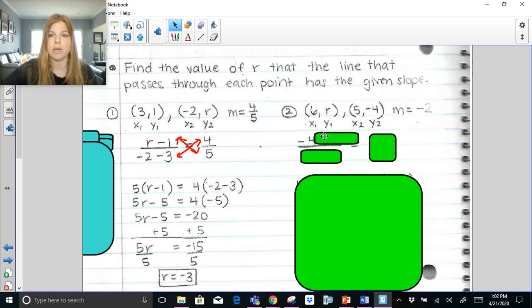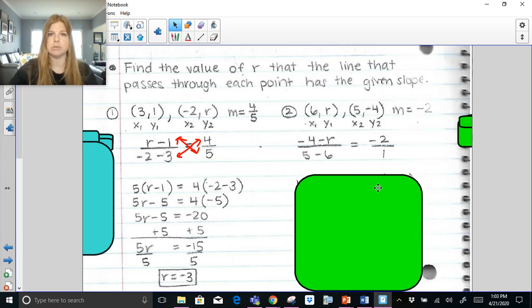Y sub 2 minus y sub 1. So negative 4 minus r. Again, y sub 2 minus y sub 1 over x sub 2 minus x sub 1. 5 minus 6. And I want that to be equal to a negative 2. But I want it to be like a proportion. So it's a fraction equaling a fraction. So I'm going to just put that negative 2 over 1.